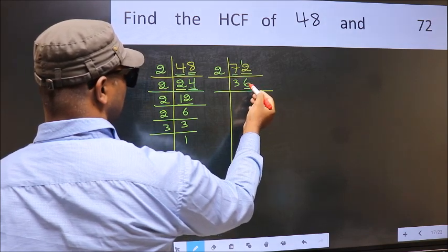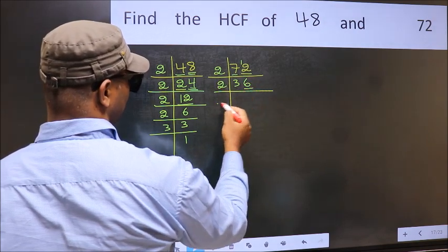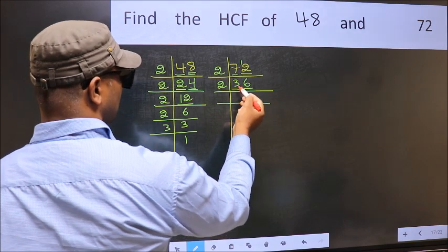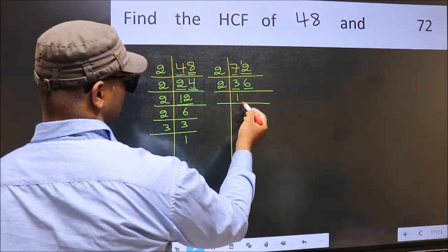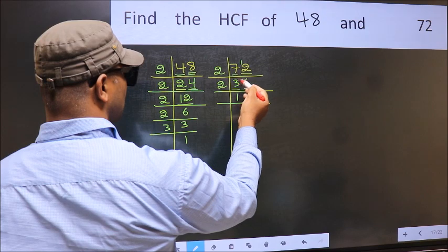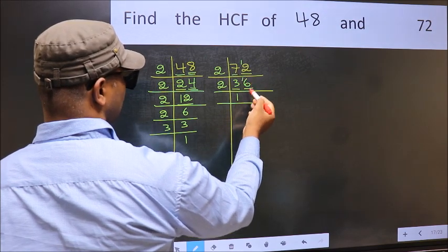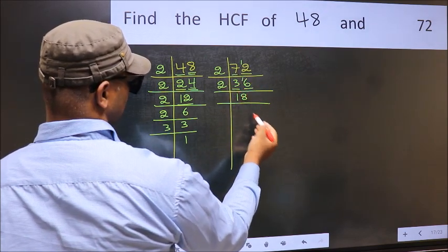Now last digit 6, even, so take 2. First number 3. A number close to 3 in 2 table is 2 times 1 is 2. 3 minus 2 is 1, 1 carried forward, 16. When do we get 16 in 2 table? 2 times 8 is 16.